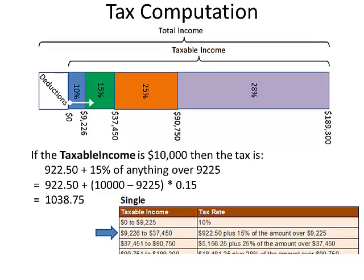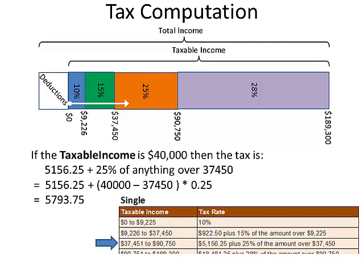For a single filer with taxable income of $10,000, the tax is $922.50 plus 15% of anything over $9,225, which works out to $1,038.75. If a single filer has taxable income of $40,000, the tax is $5,156.25 plus 25% of anything over $37,450. The amount from $0 to $9,226 is taxed at 10%, the amount between $9,226 and $37,450 is taxed at 15%, and anything over $37,450 is taxed at 25% — not 25% on everything.